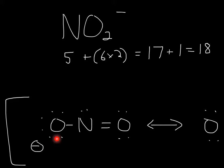Everything has an octet, it has the same number of electrons, and has a negative charge on an electronegative atom. So it matches all the criteria for a stable structure.